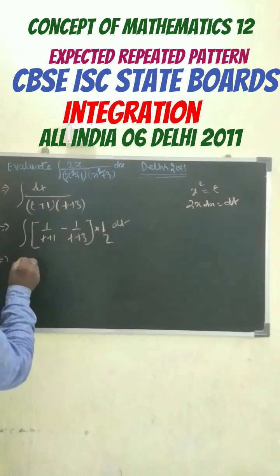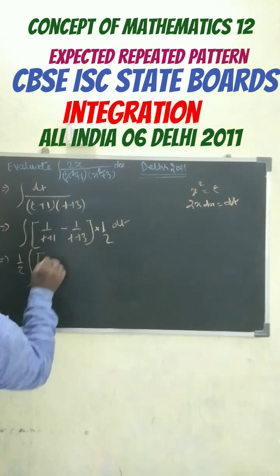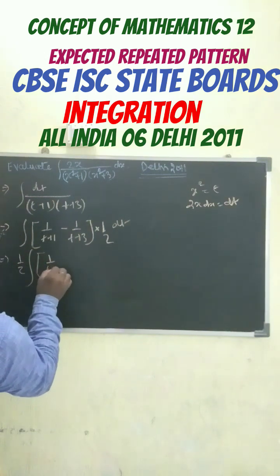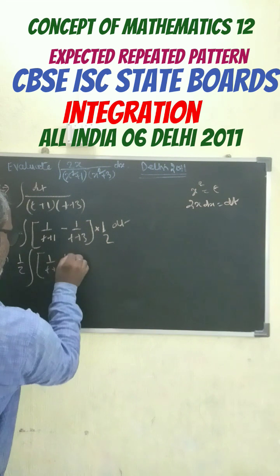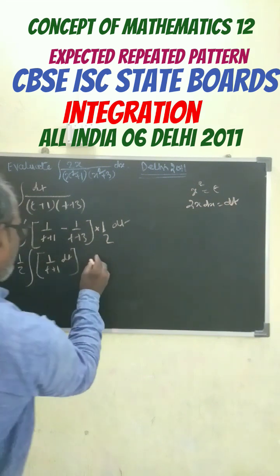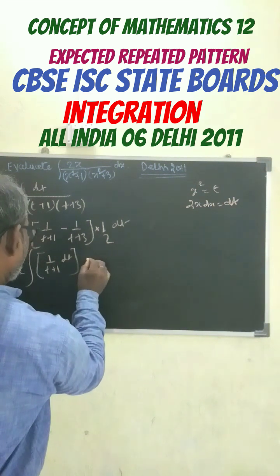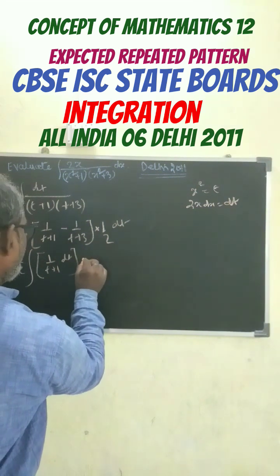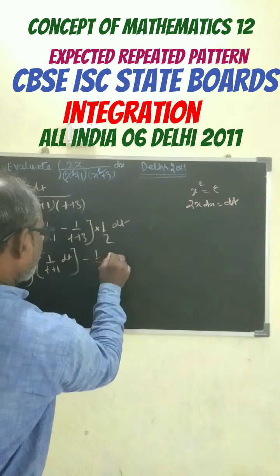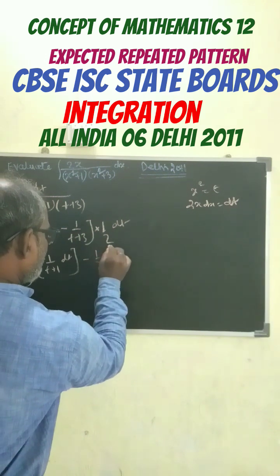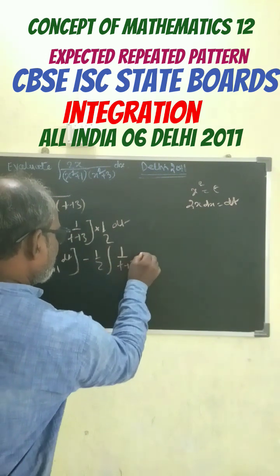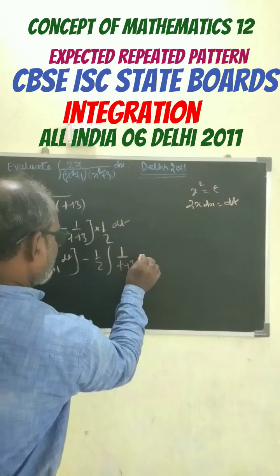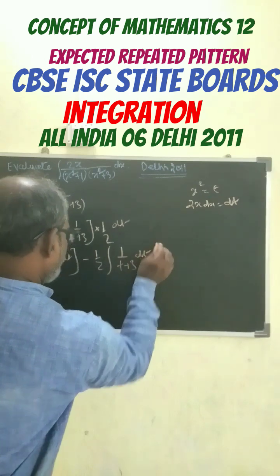This can be further written as half integration of 1 by (t plus 1) dt, minus half integration of 1 by (t plus 3) dt.